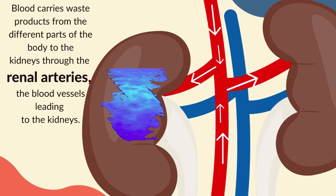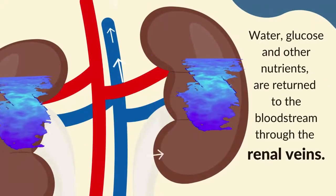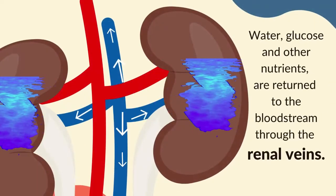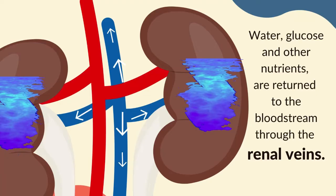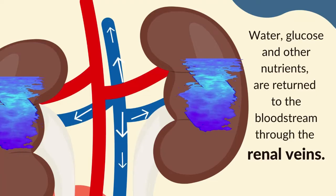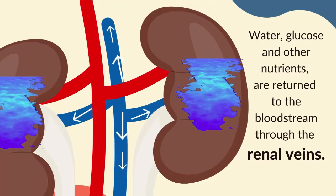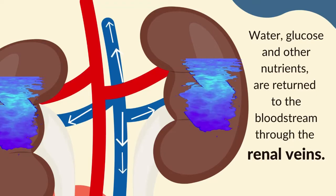Meanwhile, the water, glucose, and other nutrients are returned to the bloodstream through the renal veins, which are colored blue in this illustration.